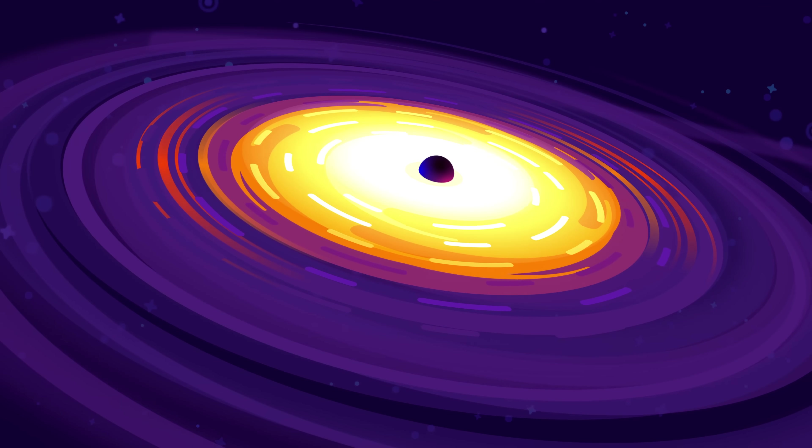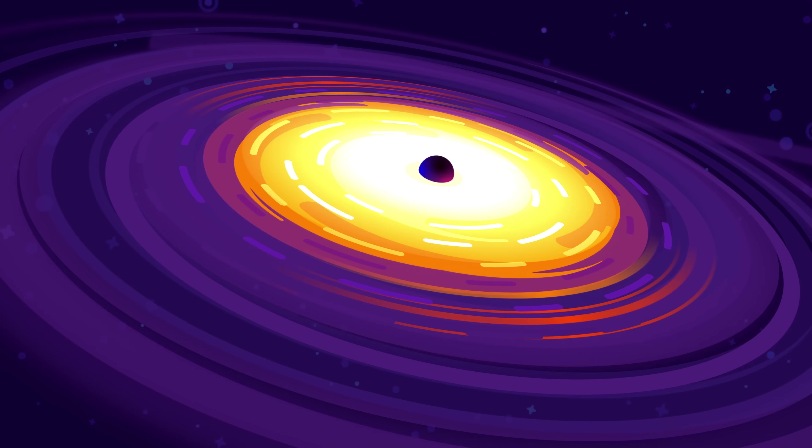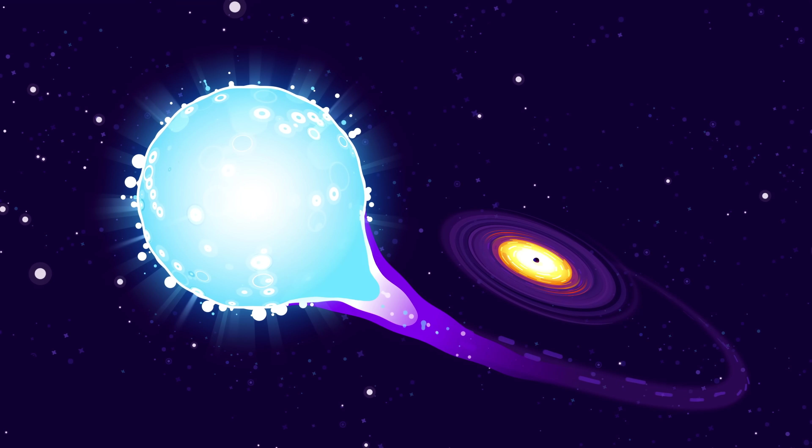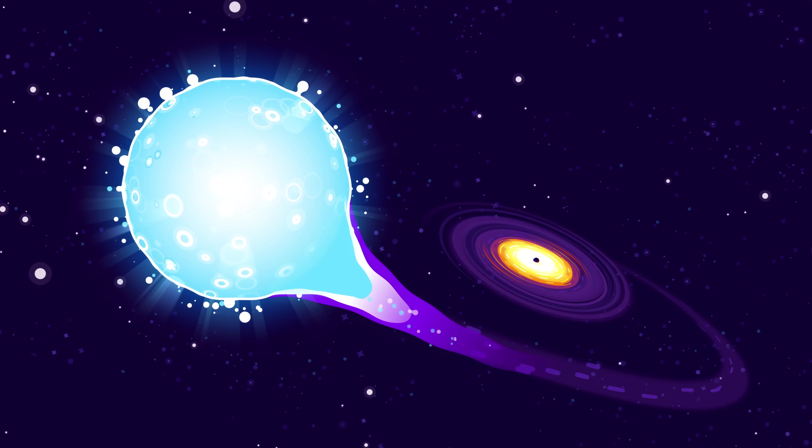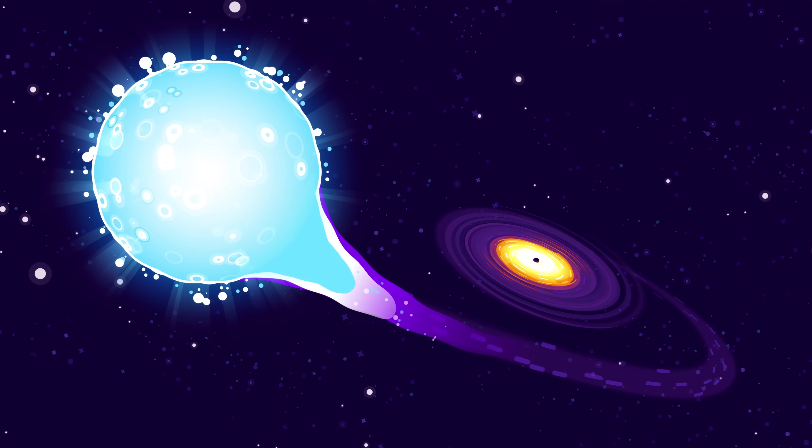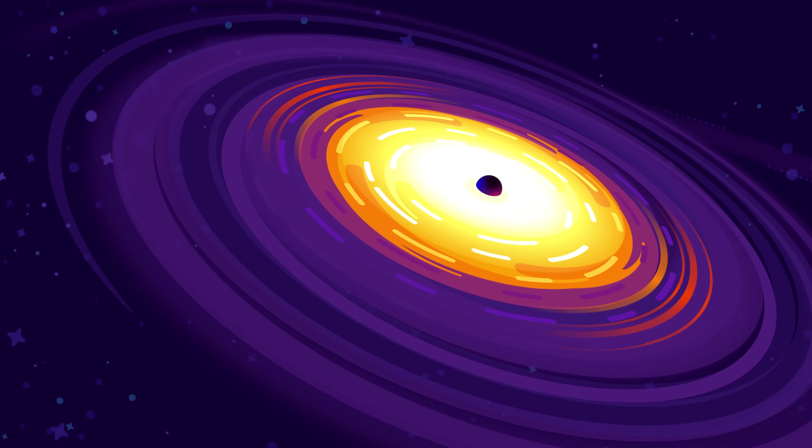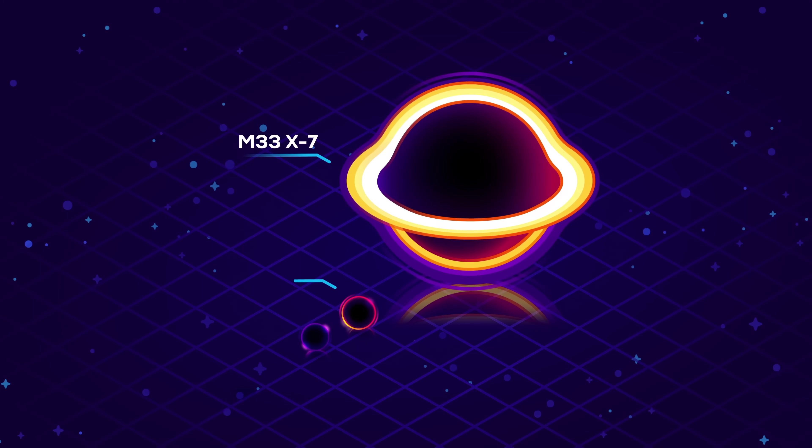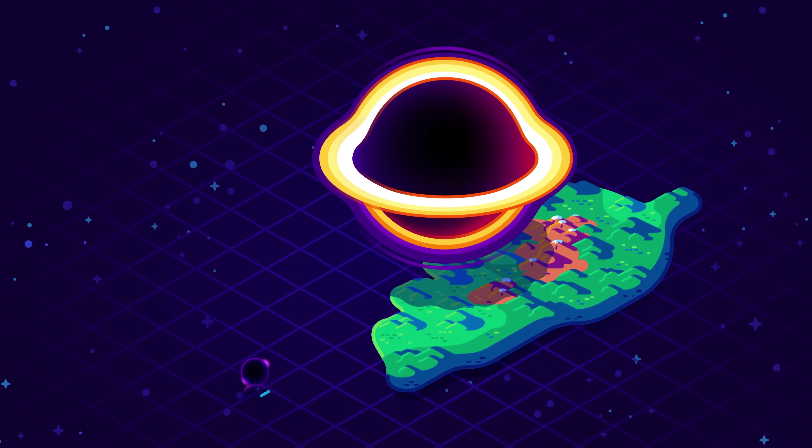One of the largest known stellar black holes is M33 X7. It currently spends its time eating a 70 solar mass blue giant bit by bit. As all that stolen matter circles towards the black hole, like water going down a drain, friction heats it up to temperatures high enough to shine 500,000 times brighter than our Sun. And yet, X7 is only 15.65 solar masses and 92 kilometers wide, just big enough to cast a shadow on Corsica.